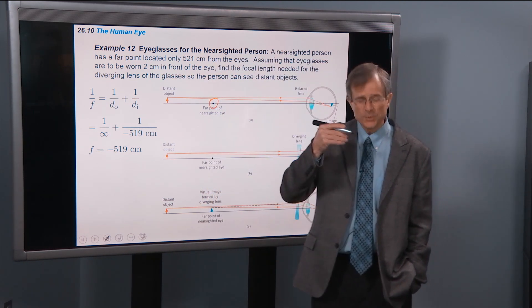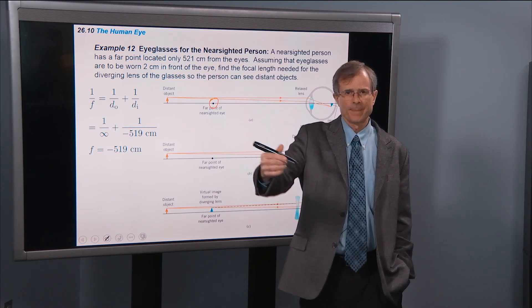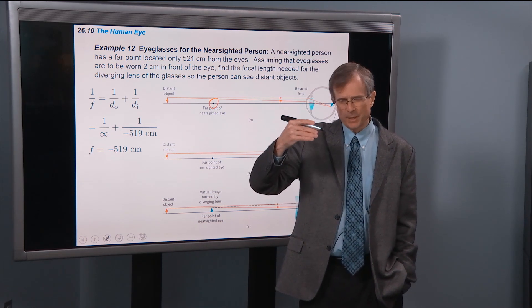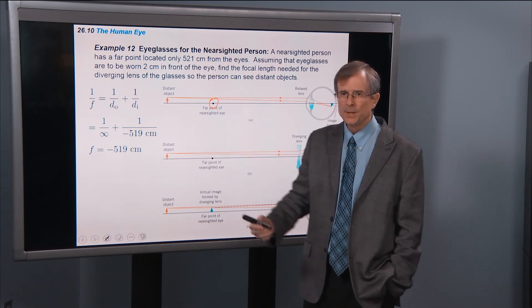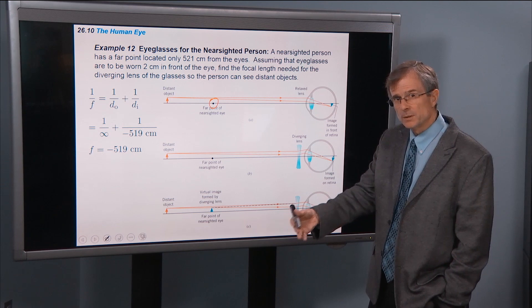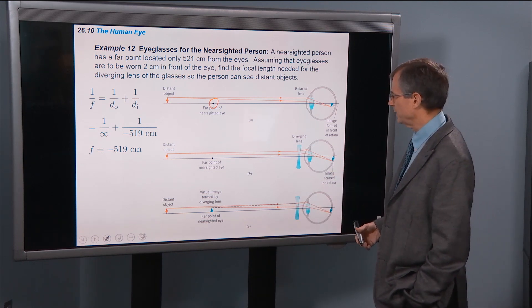So this is as far as his or her eyes can image an object. So if an object is beyond that, this nearsighted person is not going to be able to create a sharp image with his or her eye.